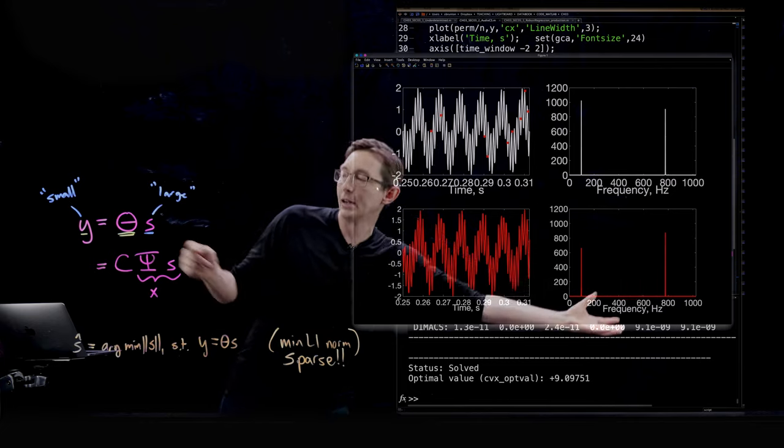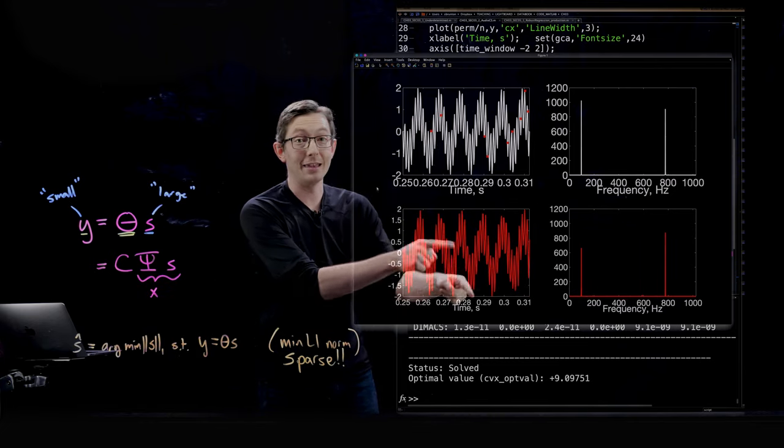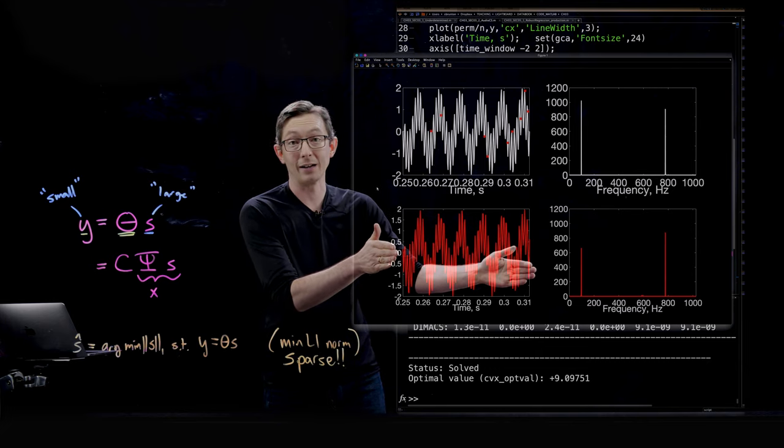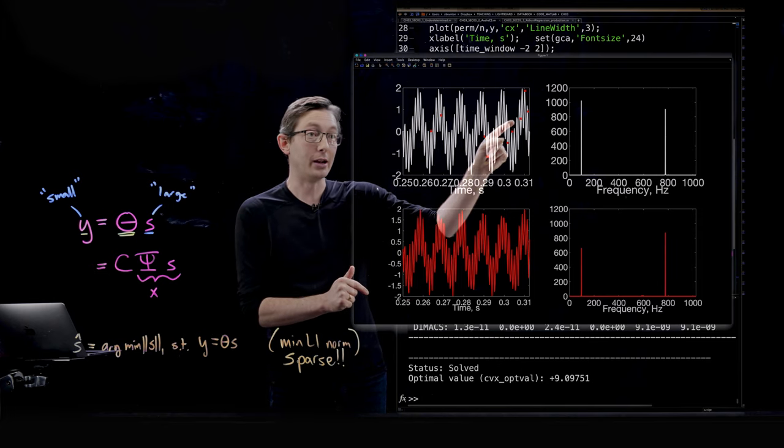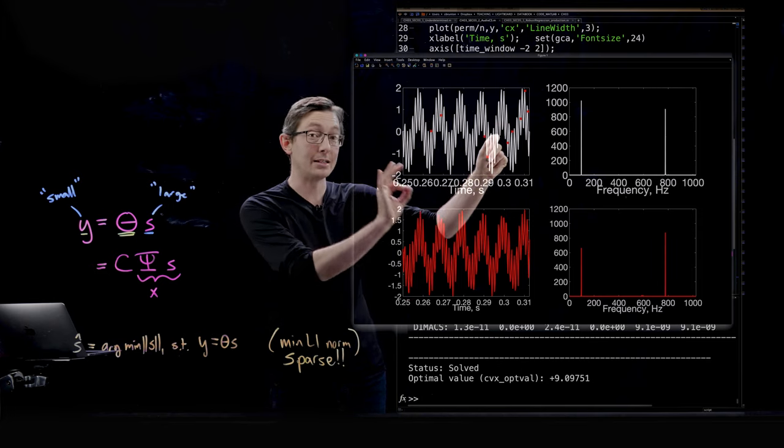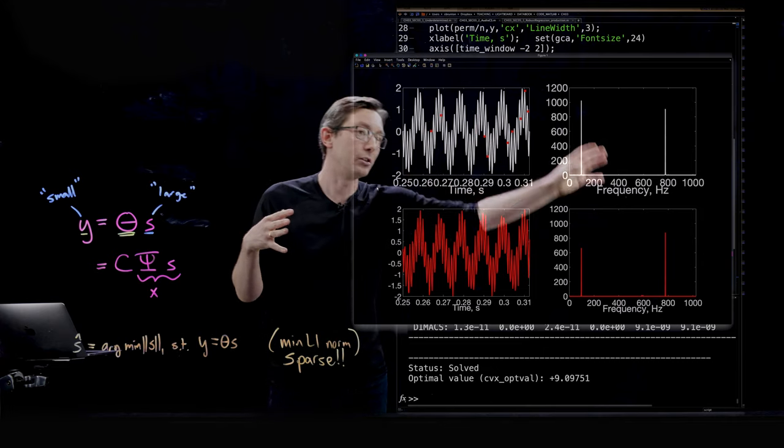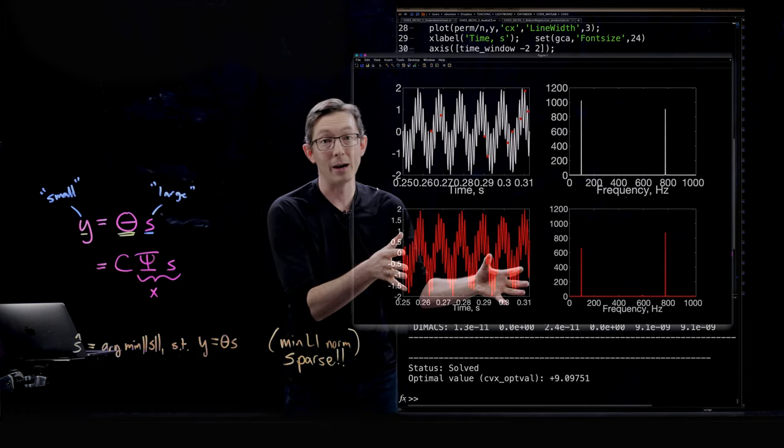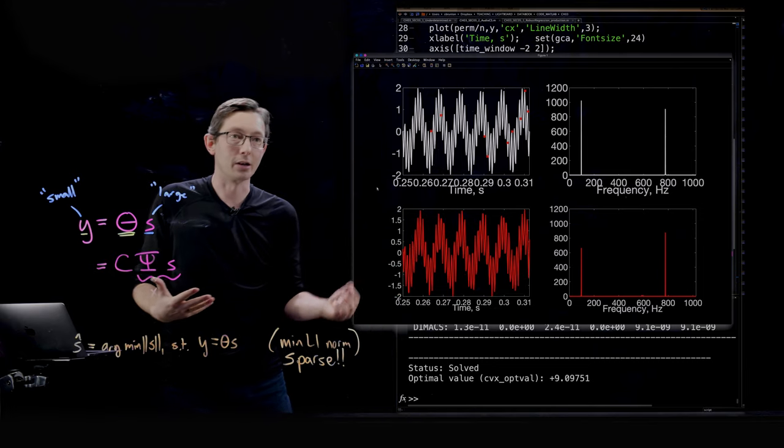And then when I inverse Fourier transform that sparse solution I recover in red this is what I think the solution is, the sparse solution is when I go back to the time domain. So even if I had only these red points but I knew exactly where they occurred in time and they were somehow randomly spread out I would be able to solve for the sparse Fourier coefficients, inverse Fourier transform, and recover my two-tone audio signal.